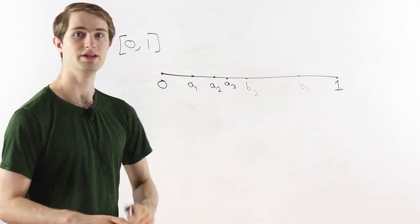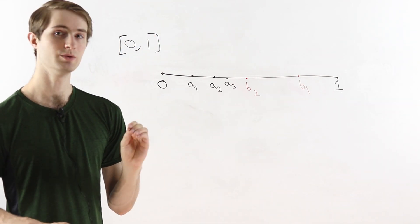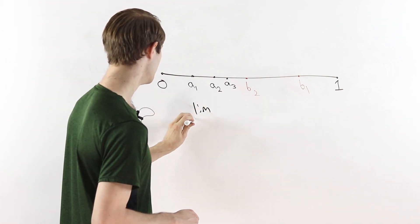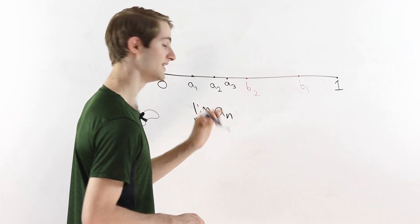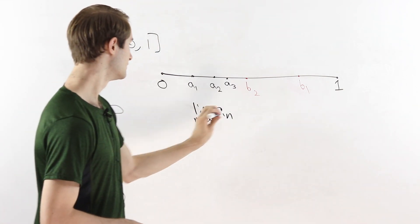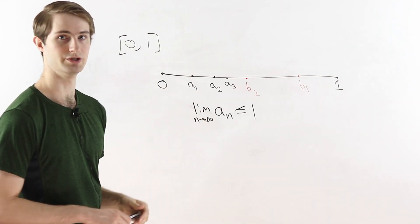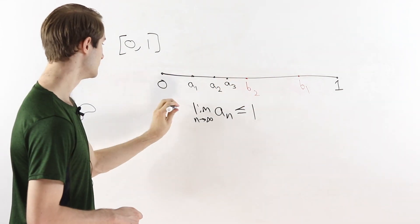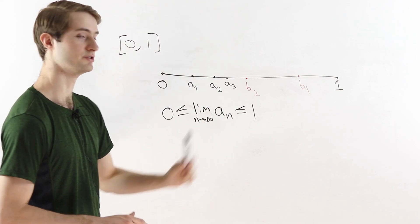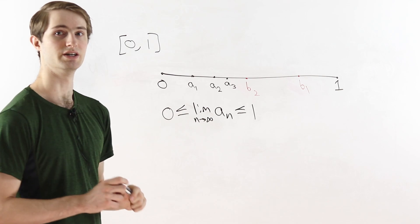We know that the sequence A_n is strictly increasing and bounded above by 1. From calculus, if a sequence is strictly increasing and bounded above, it has a limit. So the limit as n goes to infinity of A_n exists. Furthermore, since A_n is bounded above by 1 and A1 is bigger than 0, this limit will be between 0 and 1. From here, we can get to the proof that this interval is uncountable.